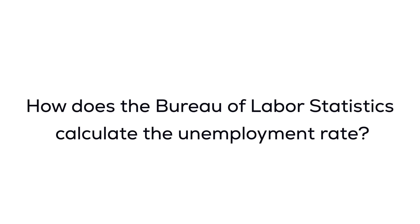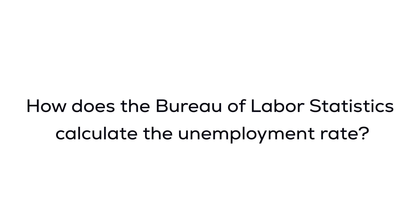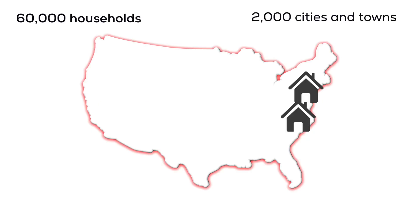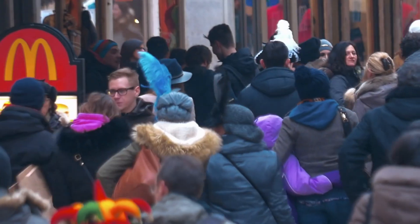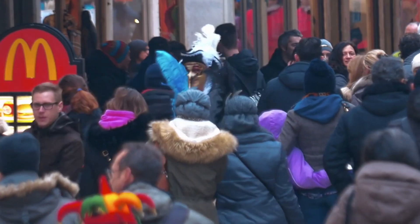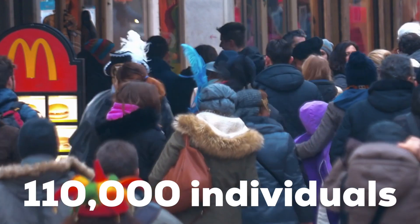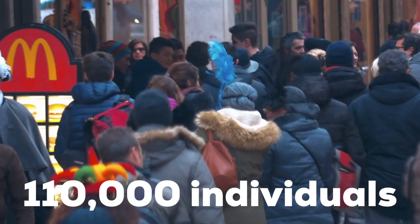The question we have today is: how does the BLS calculate the unemployment rate? During the month, the BLS samples 60,000 households in 2,000 different geographic regions. These households have 110,000 individuals.